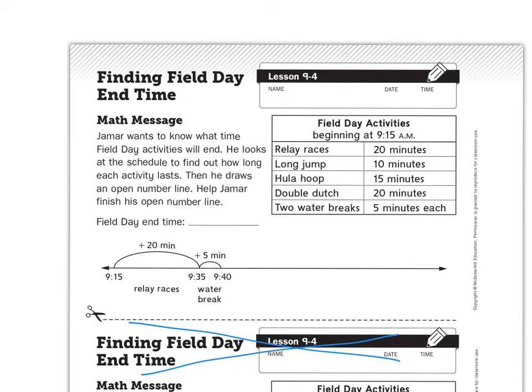Jamar wants to know what time Field Day activities will end. He looks at the schedule to find out how long each activity lasts. Then he draws an open number line. Help Jamar finish his open number line. So we know from this chart that Field Day begins at 9:15 a.m. So that is on the chart here. Then we know that there are relay races. And we know that the relay races, which are labeled right here, last for 20 minutes. And that is right here. Then we know that we have to do two water breaks. Do you all see that? And we know that each of those water breaks needs to be five minutes each. Now, we have to do two of those. So I would put maybe like two check boxes next to it. And I would check one of those. So here's the one water break. And we know that that's five minutes long.